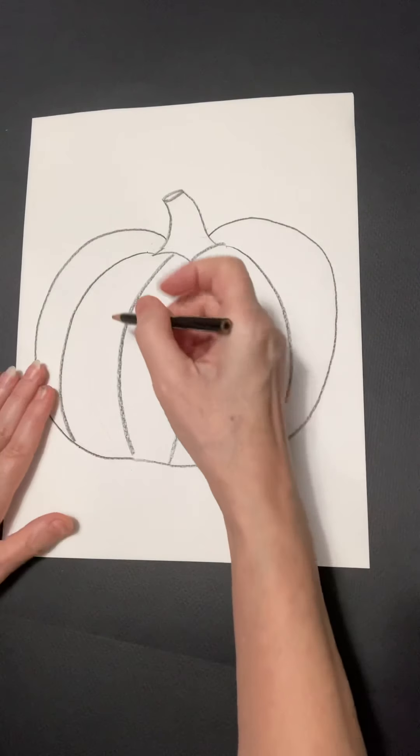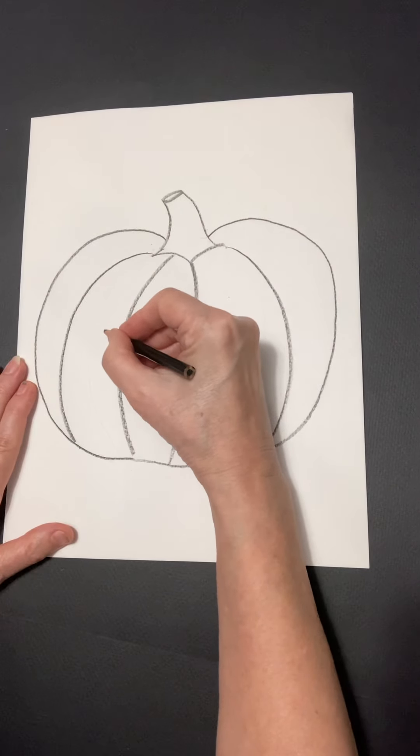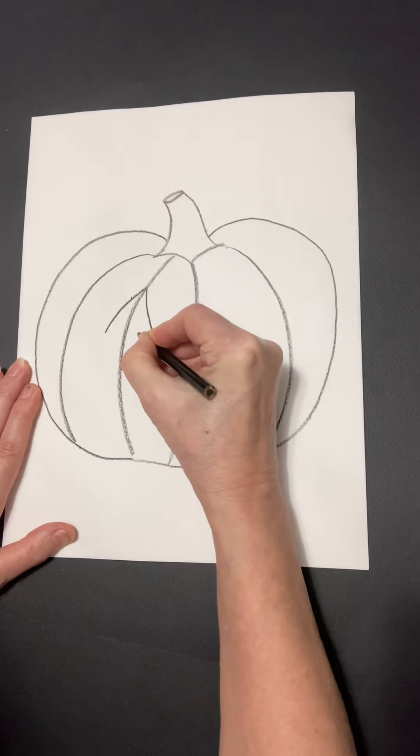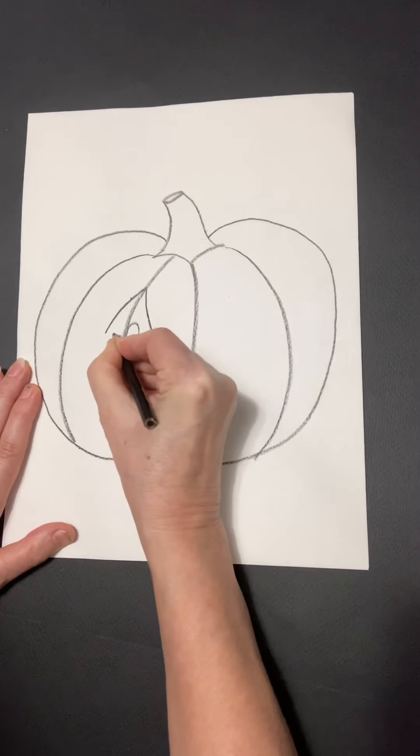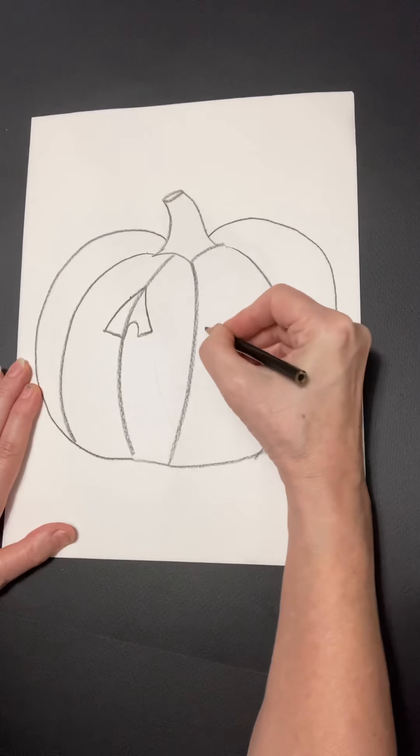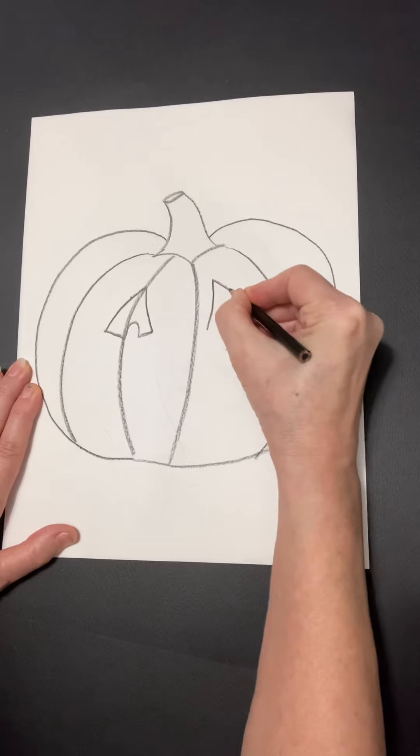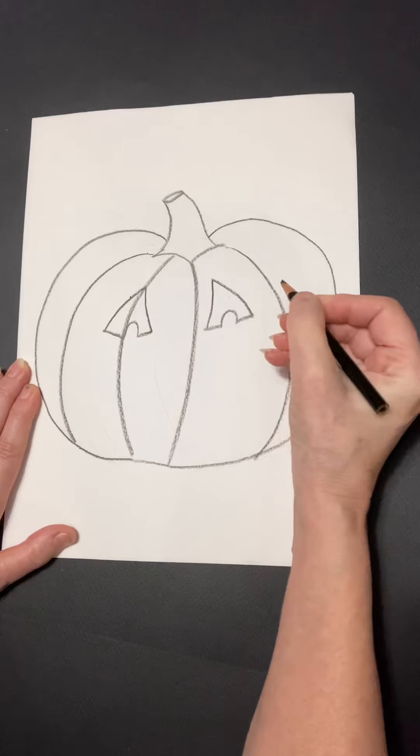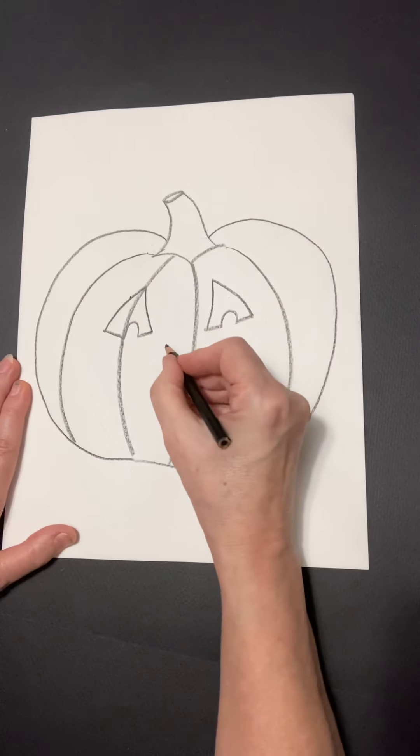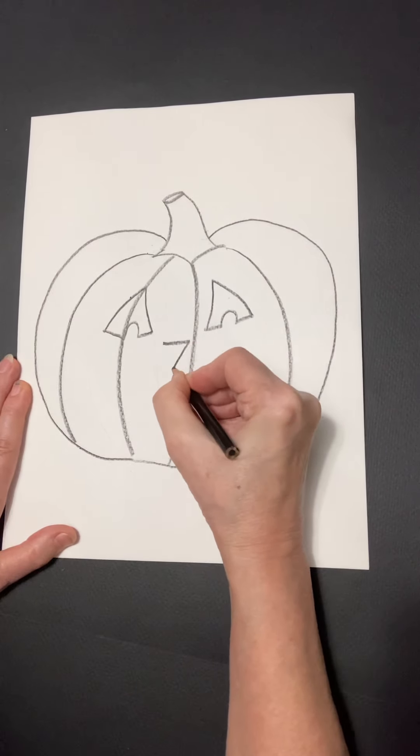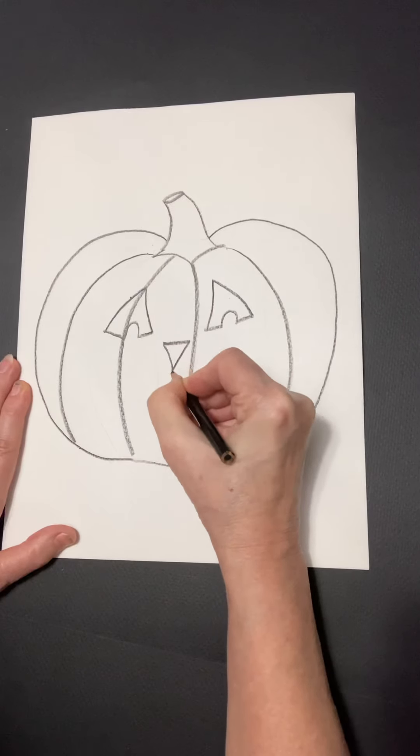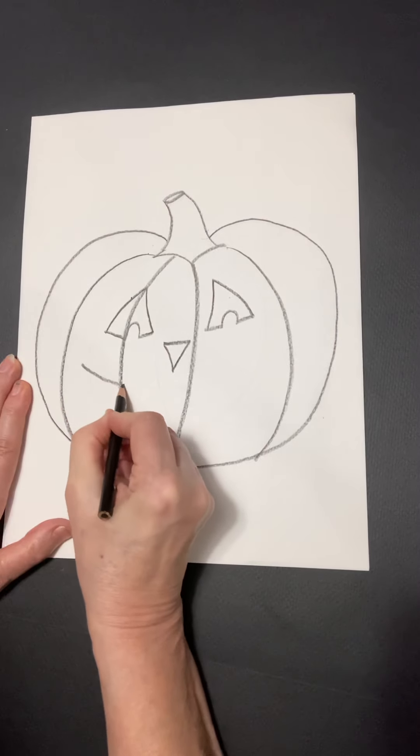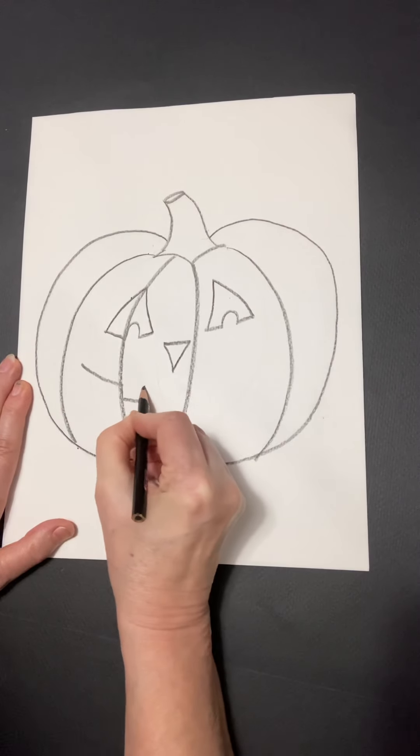I am going to do a triangle facing up and I'm going to put the pupil like that. I'm going to do a nose that's an upside down triangle. And then I'm going to do a mouth that has a few teeth.